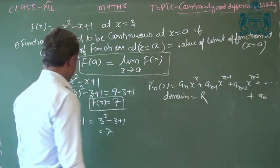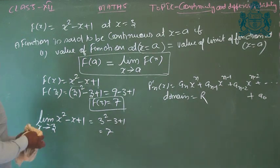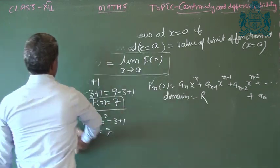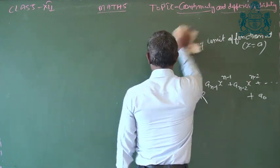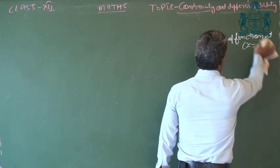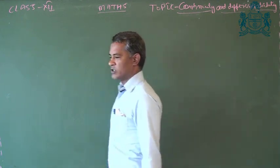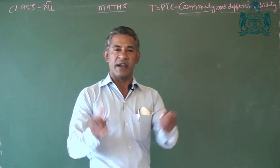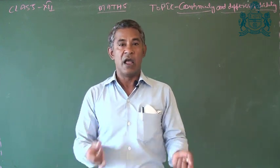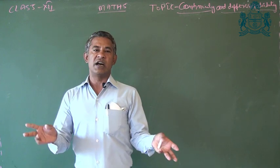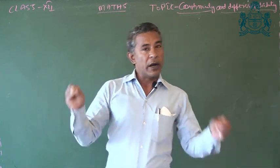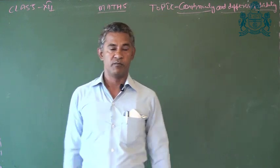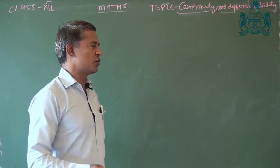Let me remind you: in class 11, in the chapter on limits and derivatives, you studied two types of limits — left hand limit and right hand limit. If both values are equal, the limit exists at that point. If left hand limit does not equal right hand limit, then the limit does not exist.